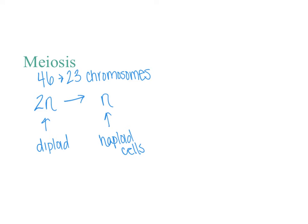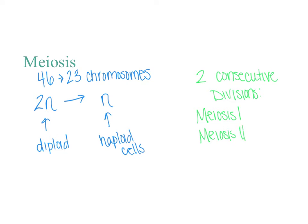When meiosis happens, it occurs in two consecutive divisions. We call those meiosis 1 and meiosis 2. Sometimes you'll see them written in Roman numerals; other times you might see them written numerically as 1 or 2. Either is fine.